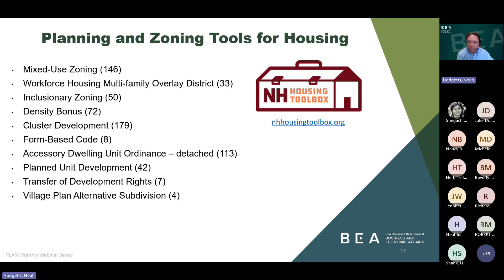Dover is the only community that has adopted all these tools, followed by Portsmouth, which has adopted all but a village plan alternative subdivision, and Londonderry, which has adopted all but a form-based code and village plan alternative subdivision.